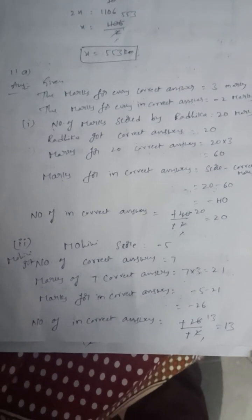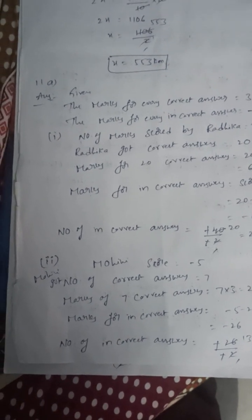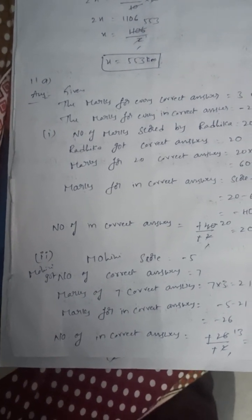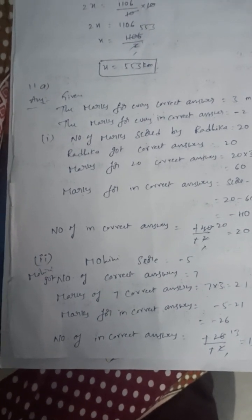Mohini's score is minus 5. Mohini got 7 correct answers. Marks for 7 correct answers is 21. Marks for incorrect is minus 26. Number of incorrect answers is 13.